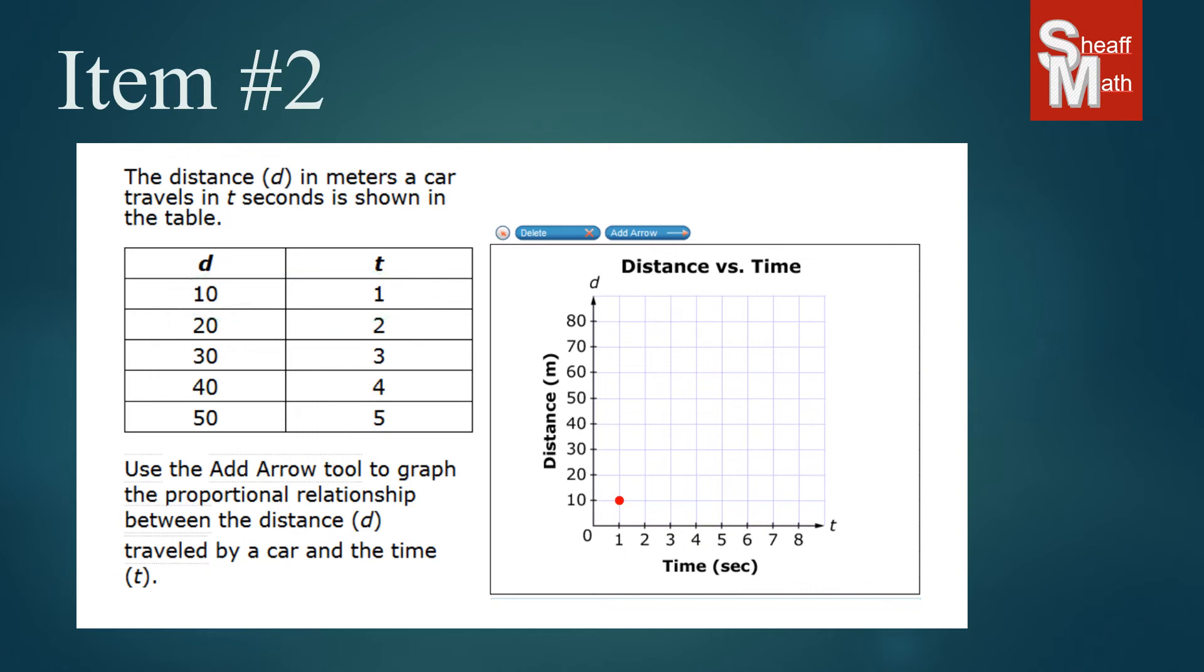If we look at the second point, it's 20 meters and it meets at 2 seconds right there. You can see where the line is going to go through. It's going to start at the origin, zero zero, and it's going to travel through right here.